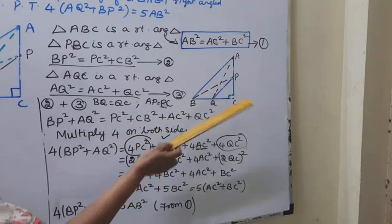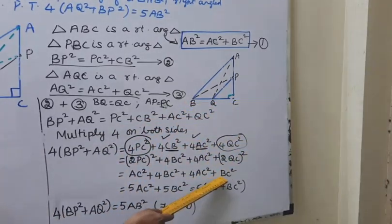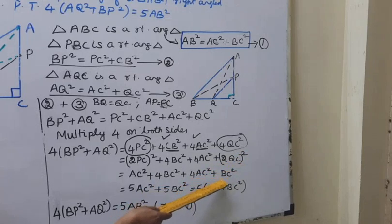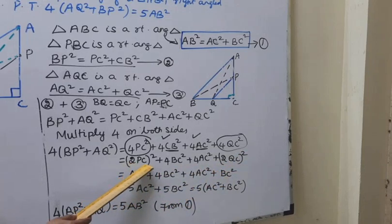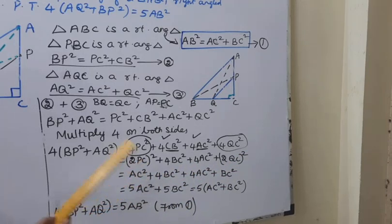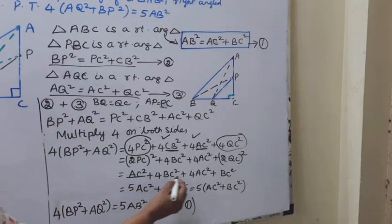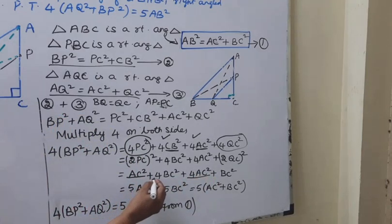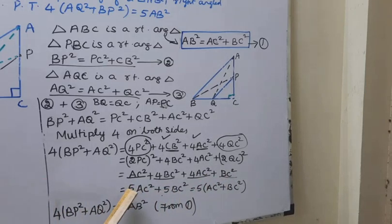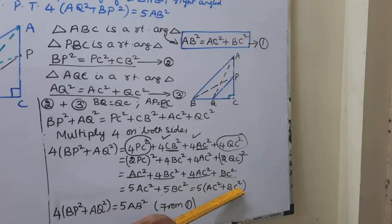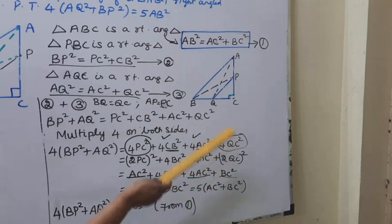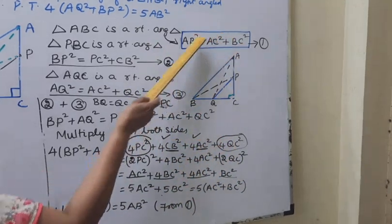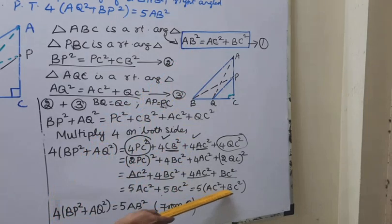Since P is the midpoint of AC, we have PC equal to AC over 2, so 2PC equals AC, meaning 4PC square equals AC square. Since Q is the midpoint of BC, we have 2QC equal to BC, meaning 4QC square equals BC square. So the right hand side becomes: 1 AC square plus 4 AC square equals 5 AC square, and 4 BC square plus 1 BC square equals 5 BC square, giving 5AC square plus 5BC square.